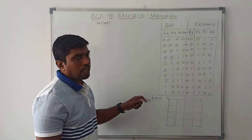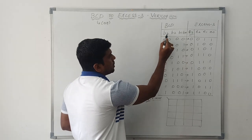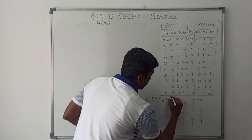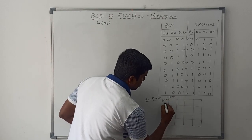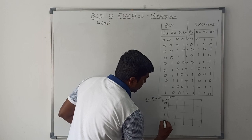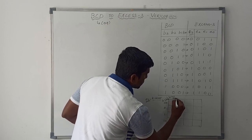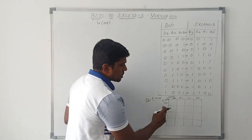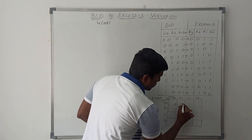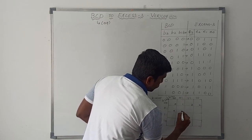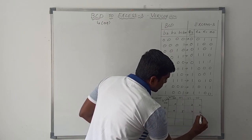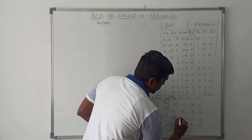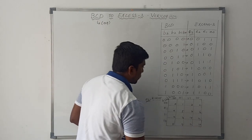Assign the input variables to the K-map. Here the input variables are B3, B2, B1, B0. The column headers are 00, 00, 01, 11, 10 and the row headers follow Gray code order. Then assign the cell numbers: 0, 1, 3, 2, 4, 5, 7, 6, 8, 9, 11, 10, 12, 13, 15, 14.